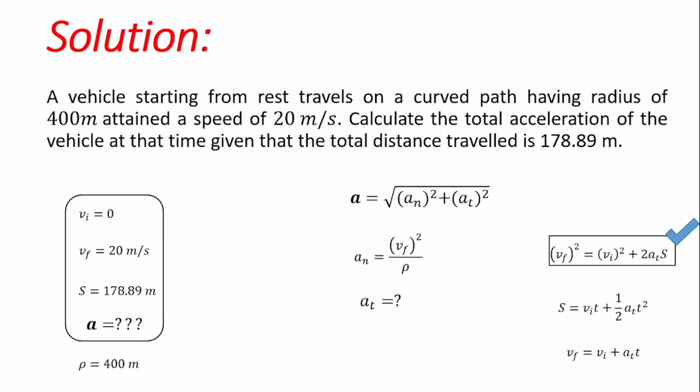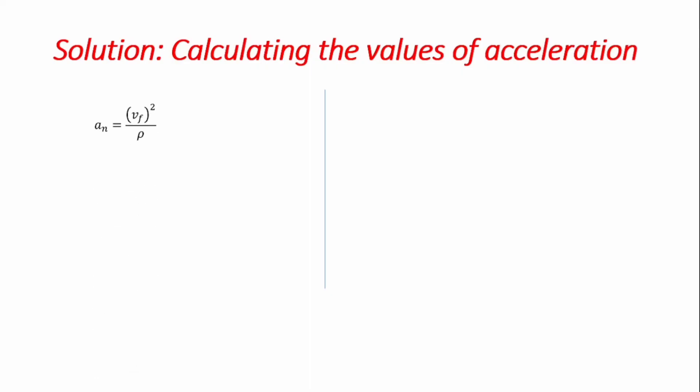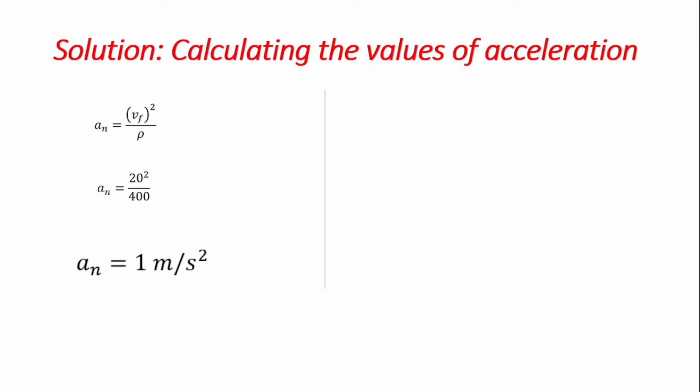We first calculate the normal component of acceleration, which equals the square of the velocity divided by the radius of curvature. Substituting the given values into the equation, the normal acceleration is calculated to be 1.1 meters per second squared.